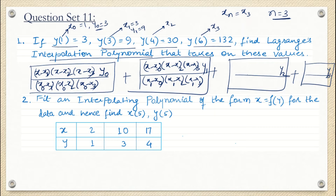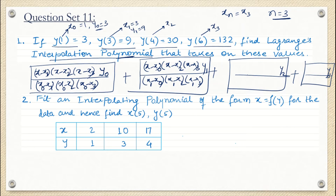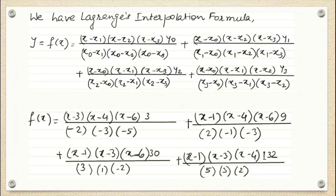The question asks us to find the Lagrange's interpolation polynomial. To build the polynomial, we keep x as it is — no specific value is given for x right now. We substitute all other values. If it were just interpolation, they would give a value of x and we'd get a numerical result, but for the polynomial, x remains as a general term.